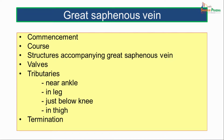Moving on to the great saphenous vein. We will study it under its commencement, course, structures accompanying the great saphenous vein, the valves, and tributaries — those near the ankle, in the leg, just below the knee, and in the thigh — and its termination.